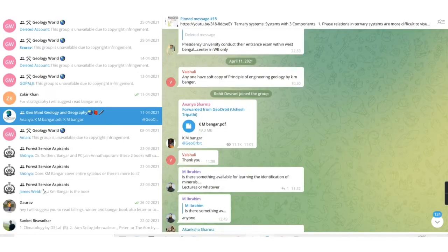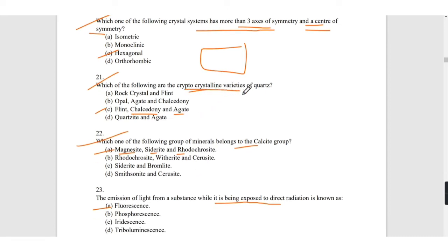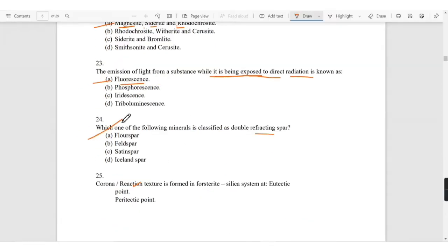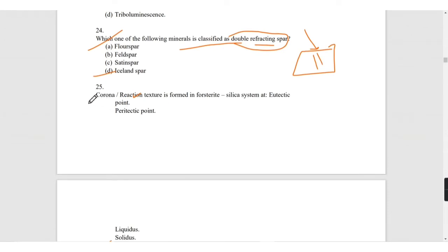Which of the following are crystalline varieties of quartz? It will be flint, chalcedony, and agate. This is given in Rutley book as well as Bhangra book. The calcite group includes magnesite, siderite, and rhodochrosite. Which of the following mineral is classified as double refracting spar? If you place one pencil on one side it will look like two objects instead of one. This will be the double refracting spar, which is Iceland spar.